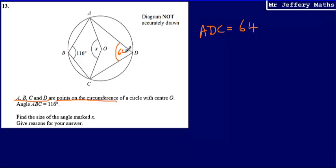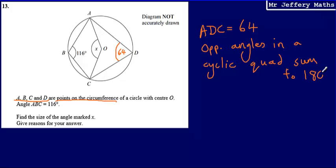The opposite angles in a cyclic quadrilateral sum to 180 degrees. So that's my first reason. The opposite angles in a cyclic quadrilateral sum to 180 degrees.